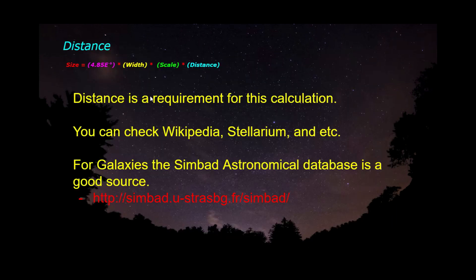The first one is distance. And distance is required for this calculation. And most objects you can check Wikipedia or Stellarium, and they'll have the distance already there. For galaxies, a good source is the Symbad Astronomical Database. And if it's none of these places, then you may be out of luck. But hopefully you can get a decent value for the distance.